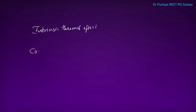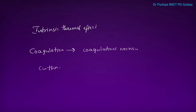Coagulation is achieved by protein denaturation and coagulation necrosis. Cutting is due to rapid focal tissue heating causing tissue disintegration without any coagulation necrosis.